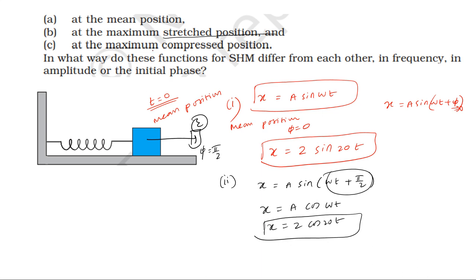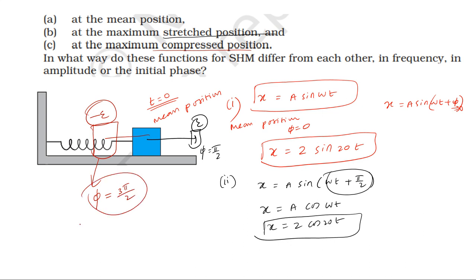The third case: maximum compressed position — the left extreme position, which is the negative extreme position. The displacement equation is x equal to A sin(ωt + 3π/2). Since sin(270° + θ) equals negative cos(θ), this gives x equal to −A cos(ωt).